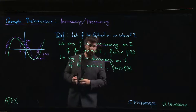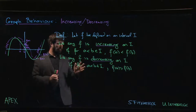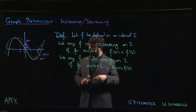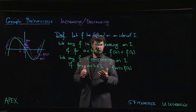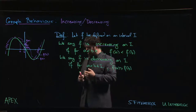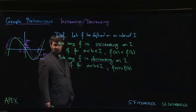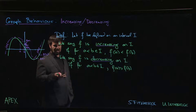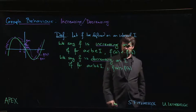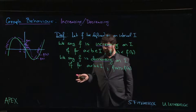Some textbooks use less-than-or-equal and greater-than-or-equal here, and then call what we have 'strictly increasing' and 'strictly decreasing.' That results in oddities — for example, a constant function would then be both increasing and decreasing, which seems strange. So we'll go with the strict inequalities; it's simpler to work with and makes sense for what we're doing.